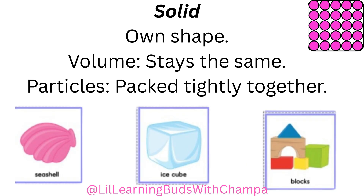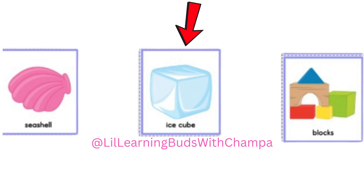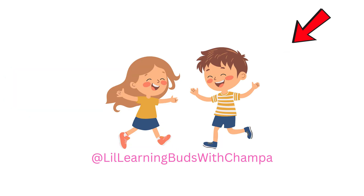So, what is a solid? A solid is something that has its own shape, meaning it does not change unless you break it or squish it. Solids keep the same volume — they do not spread out or shrink on their own. Solids have tightly packed particles; the tiny pieces inside are so close together and don't move around much. Look at the pink bubbly picture on the top right — that's how solids look from inside. Examples are a seashell, ice cube, and a wooden block. And you — are you a solid? Yes, of course, you are a solid too.